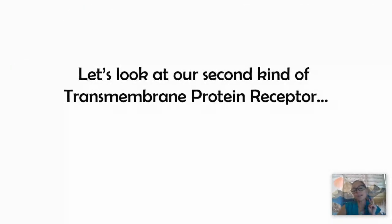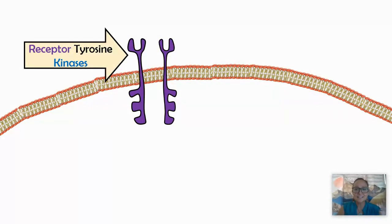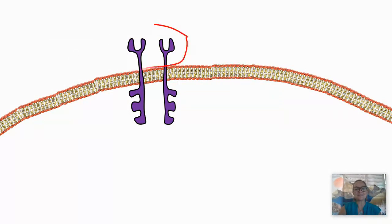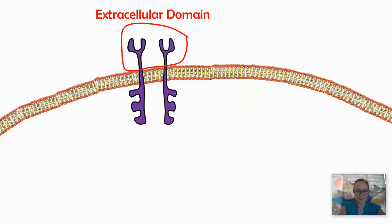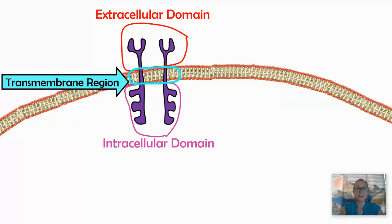Now let's look at the second kind of receptor: the receptor tyrosine kinase. Here you have a receptor that is also a kinase. When we look at receptor tyrosine kinases, you have the extracellular domain outside the cell, the intracellular domain inside the cell, and the transmembrane region embedded in the nonpolar section of the lipid bilayer.